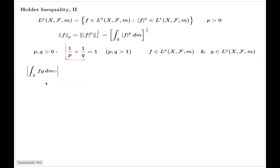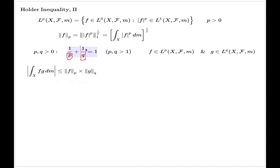We fix two functions, one from LP and the other from LQ, where p and q are connected by this relation. The Hölder inequality now looks like so. You can recognize the Hölder inequality I proved in my previous comments — this means if you allow p here to be exactly 1. When p is 1, this fraction must be 0, and informally speaking, to make this 0, you have to assign q here to be infinity.